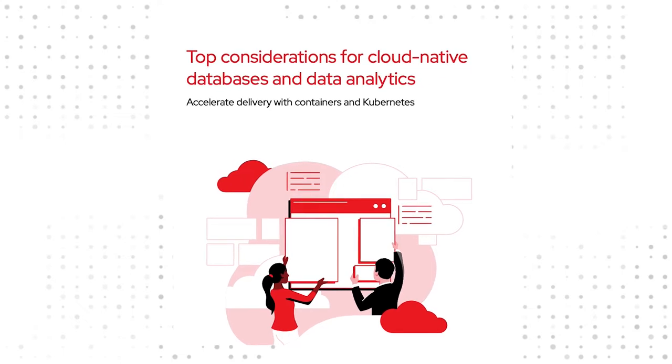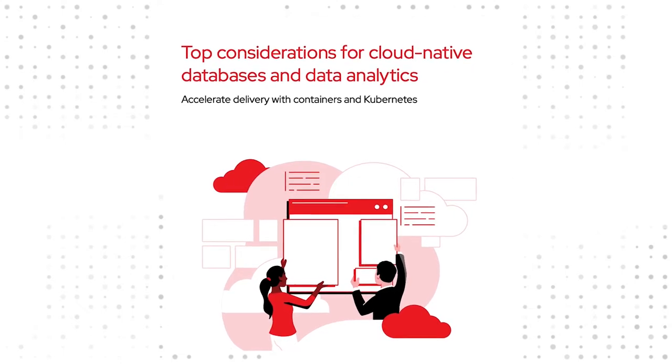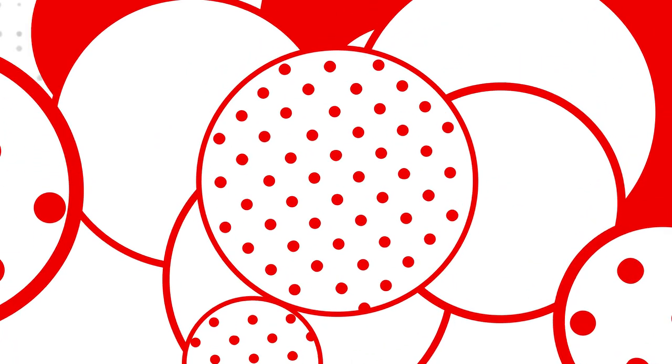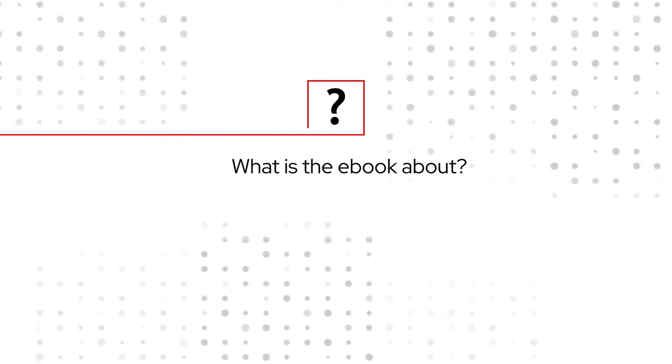Our new ebook answers some of the key questions that you may have in that process. It covers things such as what are the essential components of the data pipeline. A development team will need a data ingestion tool because the data is likely coming in from a lot of different sources. They will also need a data transformation and preparation tool to clean and transform the data for the next steps, which can be analytics, AI/ML, or some other use case.